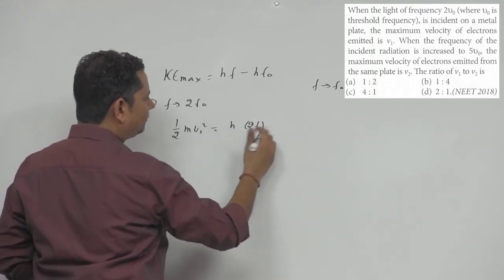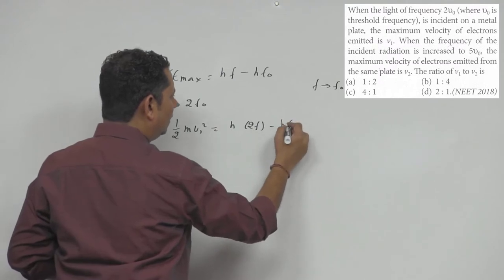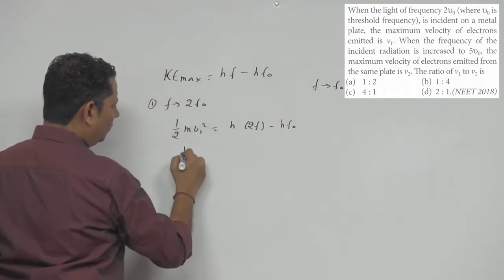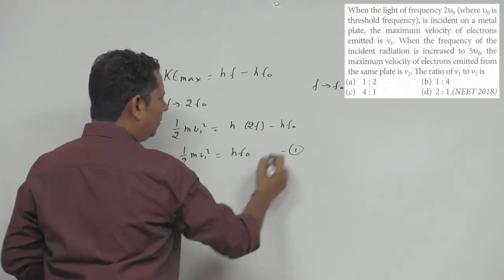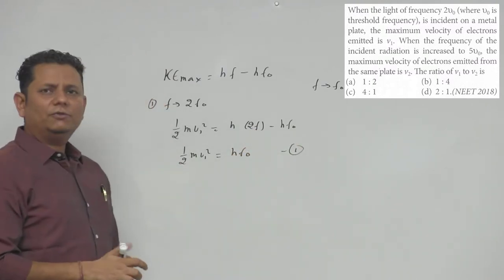So we can write this as ½mV₁² will be equal to H times the frequency we used, which is 2F₀, minus HF₀. This gives us ½mV₁² will be equal to HF₀. This is your first equation.